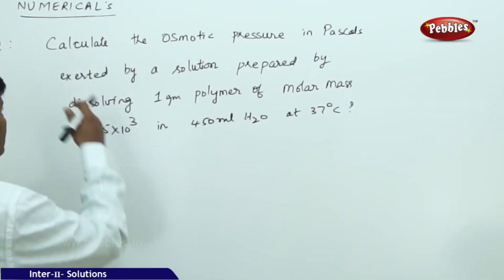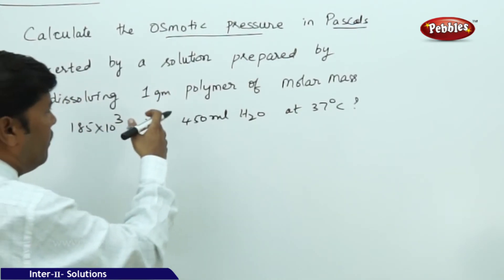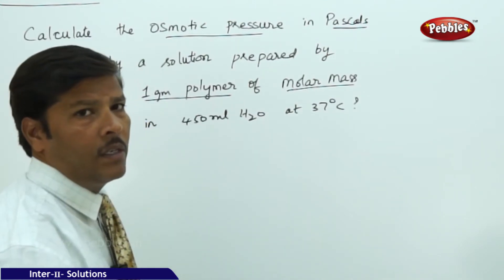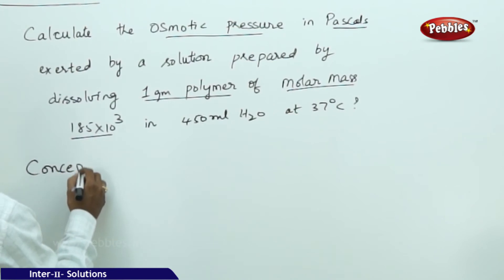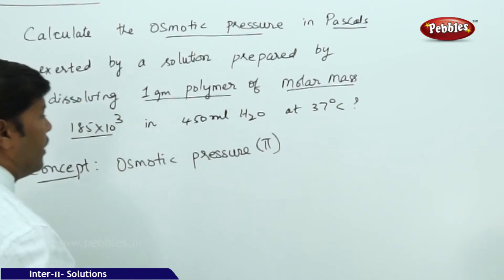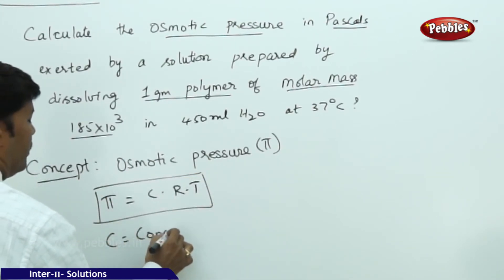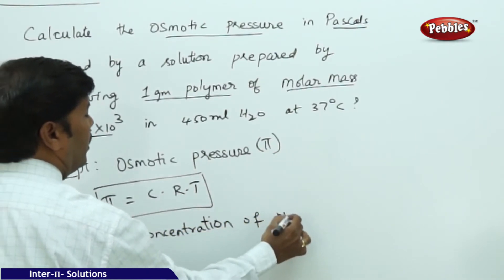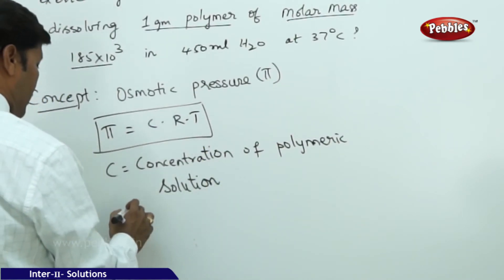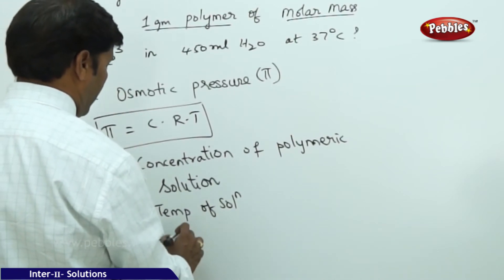The next numerical: calculate the osmotic pressure in Pascals of a solution made by dissolving 1 gram of a polymer of molar mass 185 × 10³ g/mol in 450 mL of water at 37°C. This problem is based on osmotic pressure. Osmotic pressure π = CRT, where C is concentration, R is the gas constant, and T is temperature.